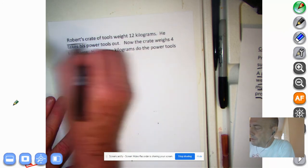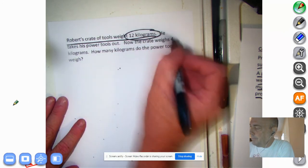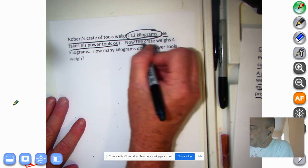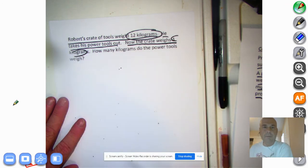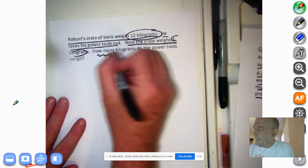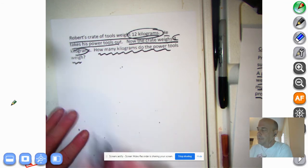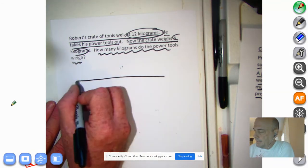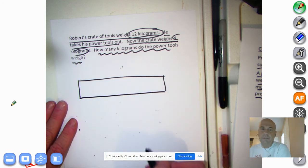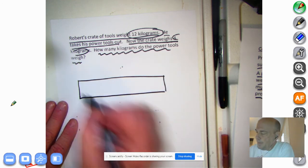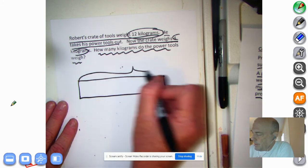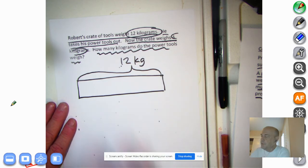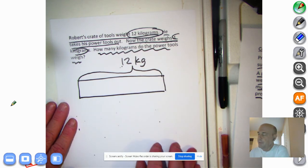Robert's crate of tools weighs 12 kilograms. That's something we do know. He takes his power tools out. That's something we also know. Now the crate weighs 4 kilograms. That's something we also know now. And how many kilograms do the power tools weigh? Okay, so let's take a look at this. Here's his toolbox. Okay, we got his toolbox there. And it weighs 12 kilograms. And I'm going to abbreviate kilograms, okay? So let's set that up. This is the toolbox. It weighs 12 kilograms, okay?